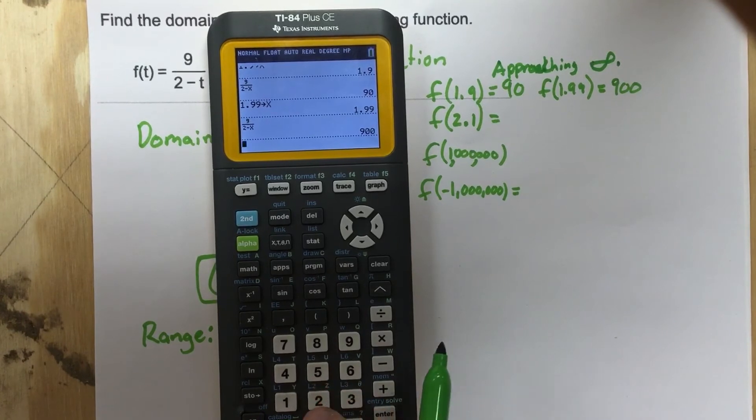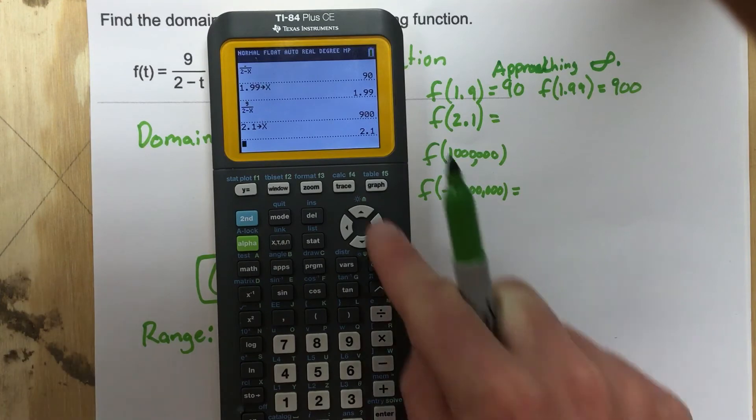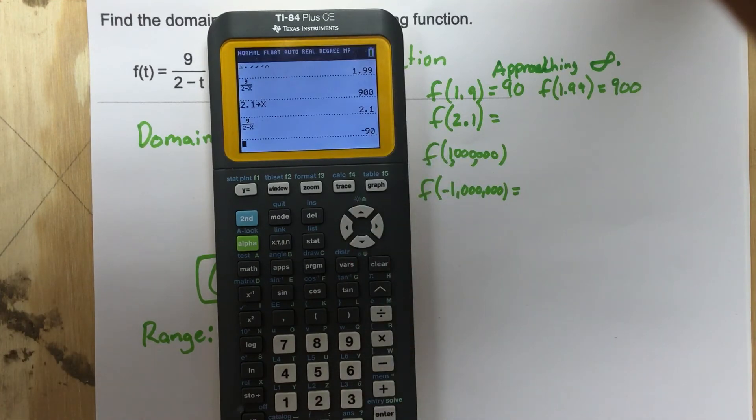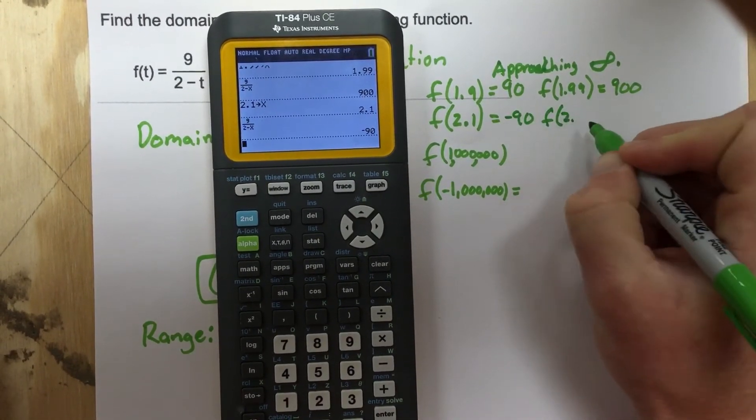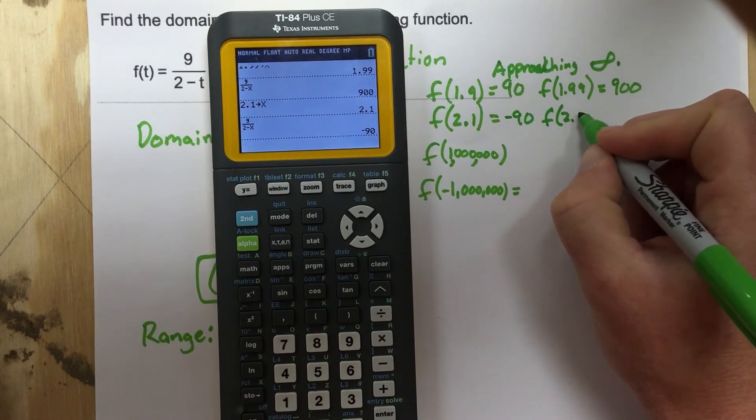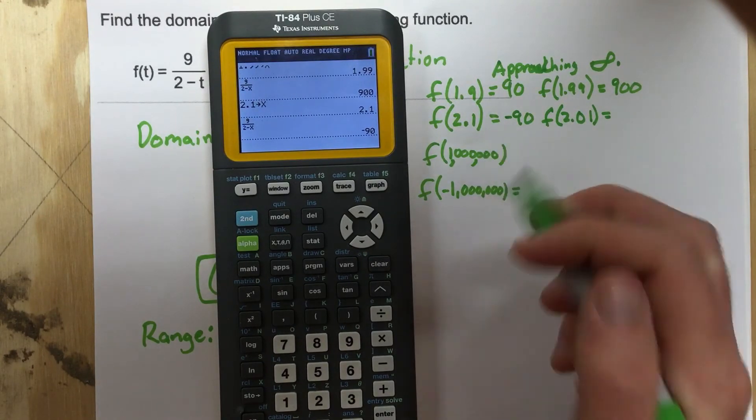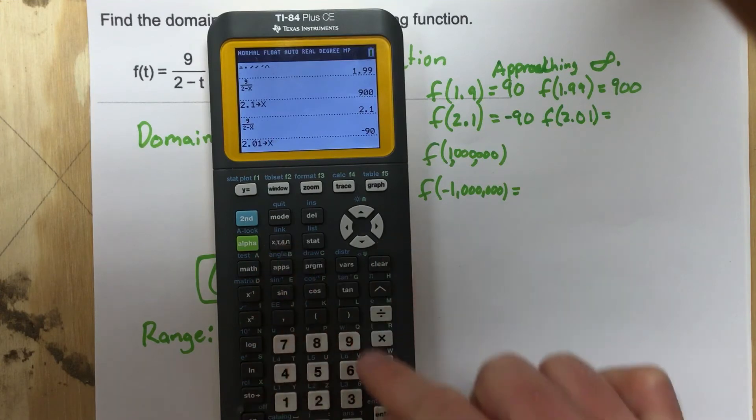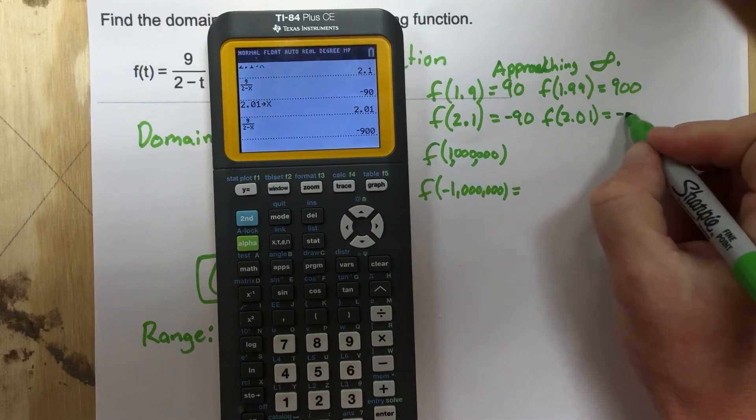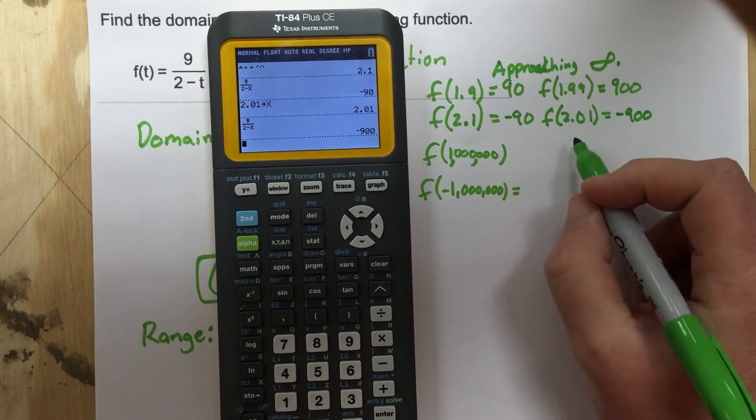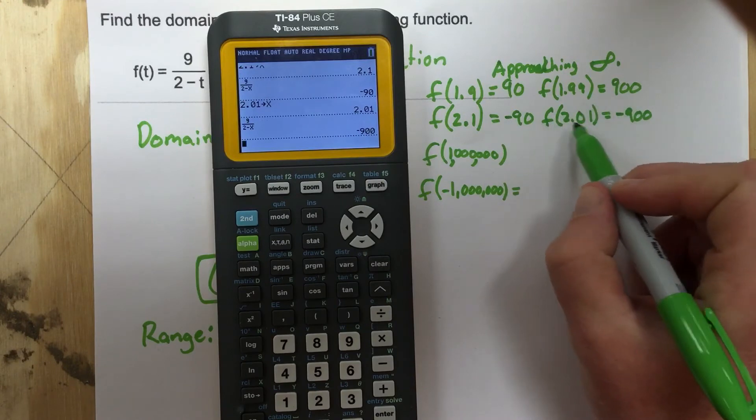Now let's do f of 2.1. So we're going to say 2.1 stored as x. And then we're going to grab that function again. And we get negative 90 this time. And then if I do f of 2.01, that's even closer to 2. 2.01, let's store it as x. Let's grab the function again. I get negative 900. Obviously, if you go f of 2.001, you should expect negative 9,000. So in this case, we're approaching negative infinity here.